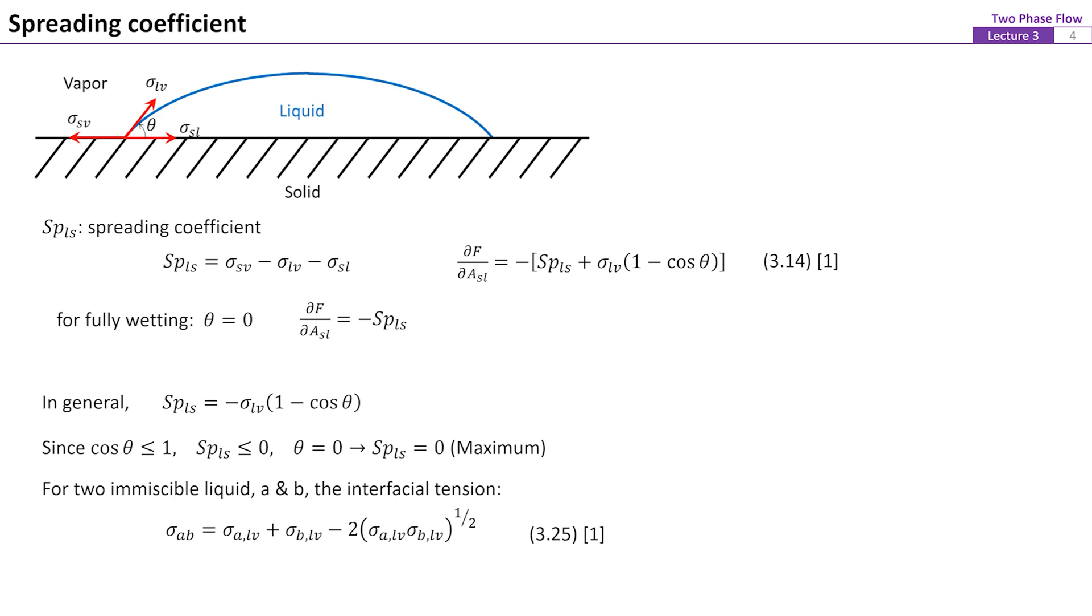In general, for a droplet on the solid surface at equilibrium, the spreading coefficient is given by equation 14. Since the maximum value of cosine theta is 1 and the surface tension is a positive value, in theory, the maximum possible value for the spreading coefficient is zero. A positive value of the spreading coefficient indicates the liquid will spontaneously spread into a thin film on the solid surface.